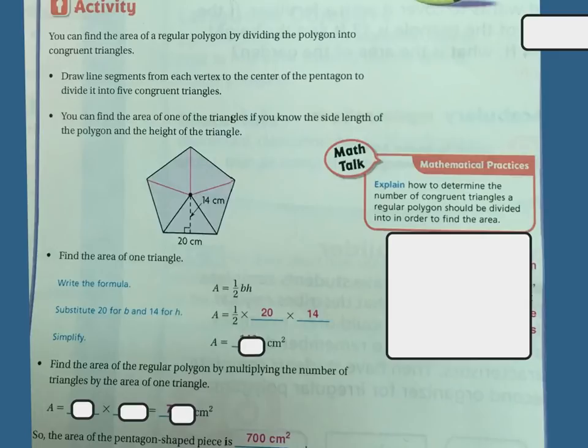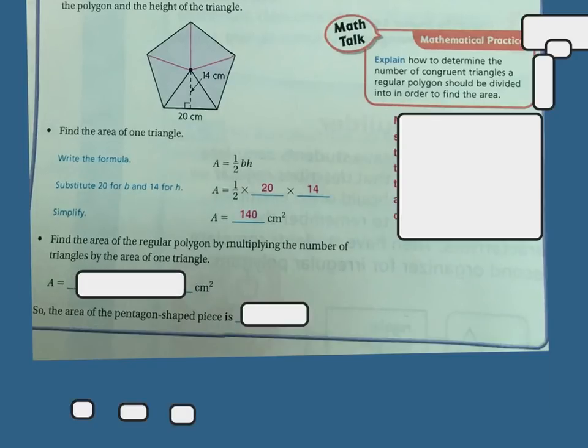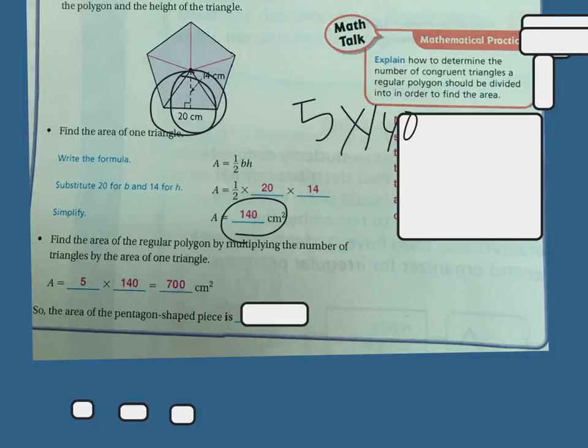So 20 times 14 is 280, but then remember I have to divide by two so that gets me to 140. Okay, so one of my triangles is 140, but how many triangles do I have? Well I have five. So if I multiply that five times the 140, I'm going to get the area of the entire thing. So area is going to equal five times the 140, and 140 times five is 700 centimeters squared. So the area of the pentagon shape is 700 centimeters squared.